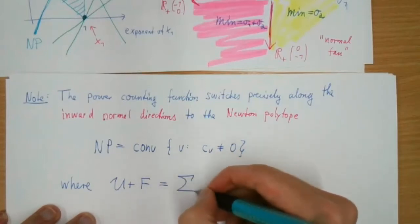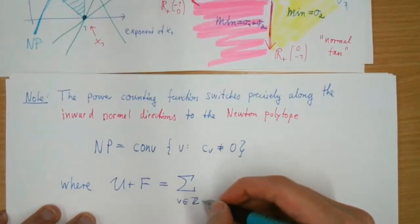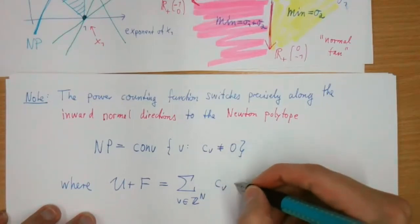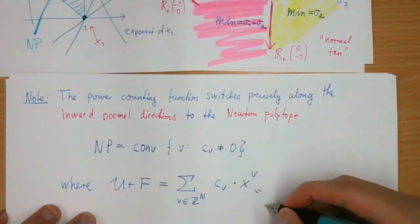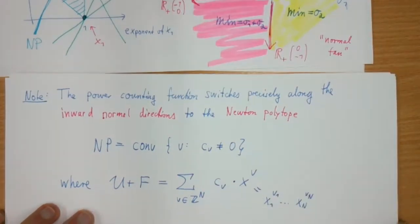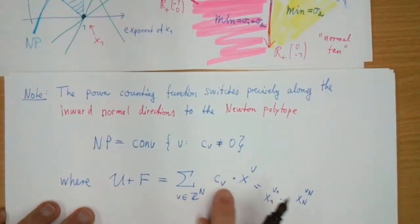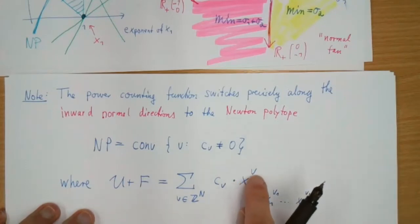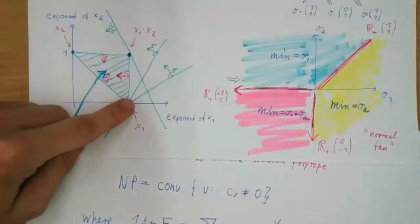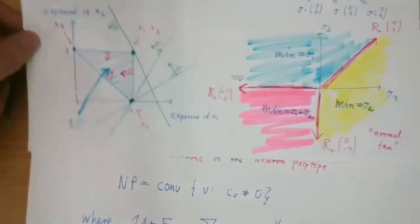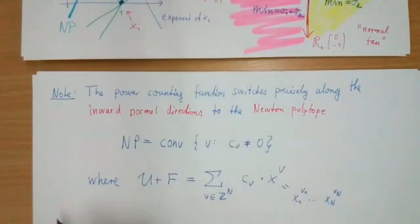In general, the Newton polytope NP is defined as the convex hull of the exponent vectors of all non-vanishing monomials. We write the polynomial U + F as a linear combination of monomials x₁^{v₁}···xₙ^{vₙ} with exponent vectors v, and the convex hull of all these exponent vectors is the Newton polytope. This is just a formalization of what we saw in the picture.